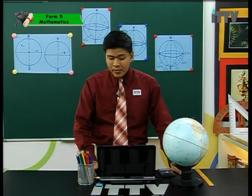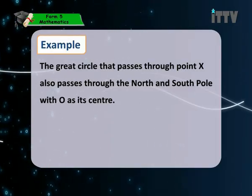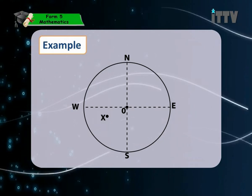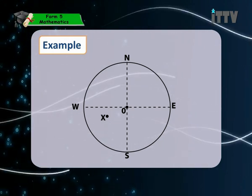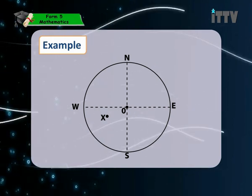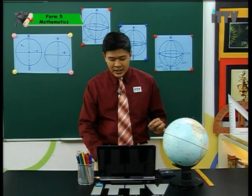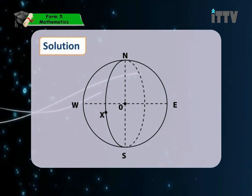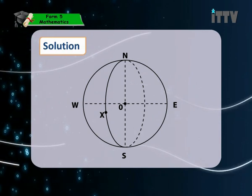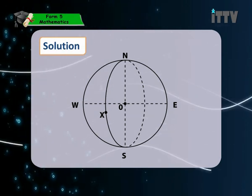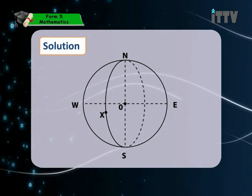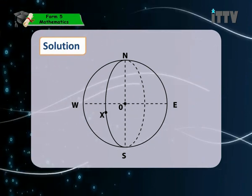Here is an example: the great circle that passes through point X also passes through the north and south poles, with O as its center. In a two-dimensional view of the earth, to construct a great circle through X, you draw a meridian from the north pole passing through X down to the south pole, then add the other meridian at the back of the earth represented by dotted lines.